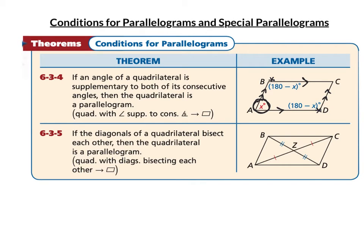What I hope you're noticing is that these reasons to show a quadrilateral is a parallelogram also come from the properties of a parallelogram — opposite sides parallel, opposite sides congruent, opposite angles congruent, consecutive angles supplementary, and diagonals bisect each other. We're essentially using the converses of those properties. The only condition that's different is the one where one pair of sides is both congruent and parallel.